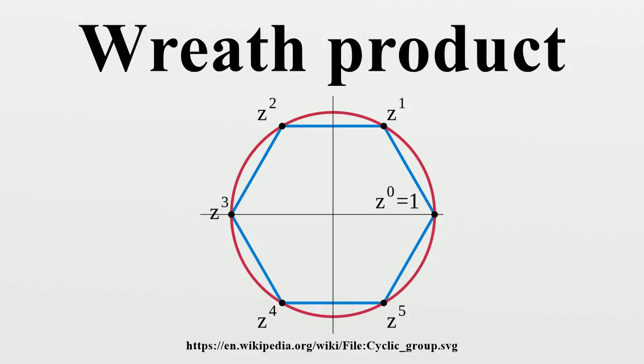Examples: The lamplighter group is the restricted wreath product Z_2 wreath Z. Z_M wreath S_N.